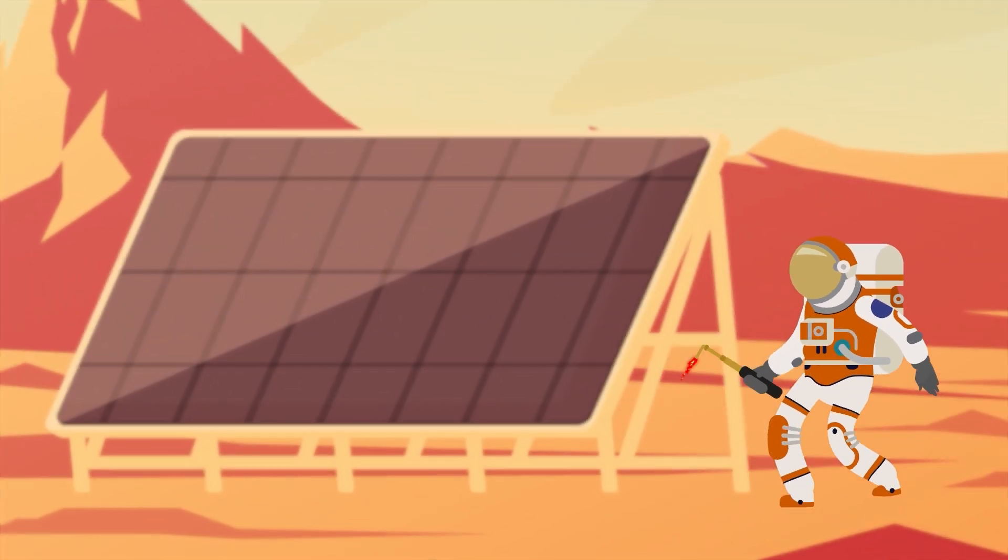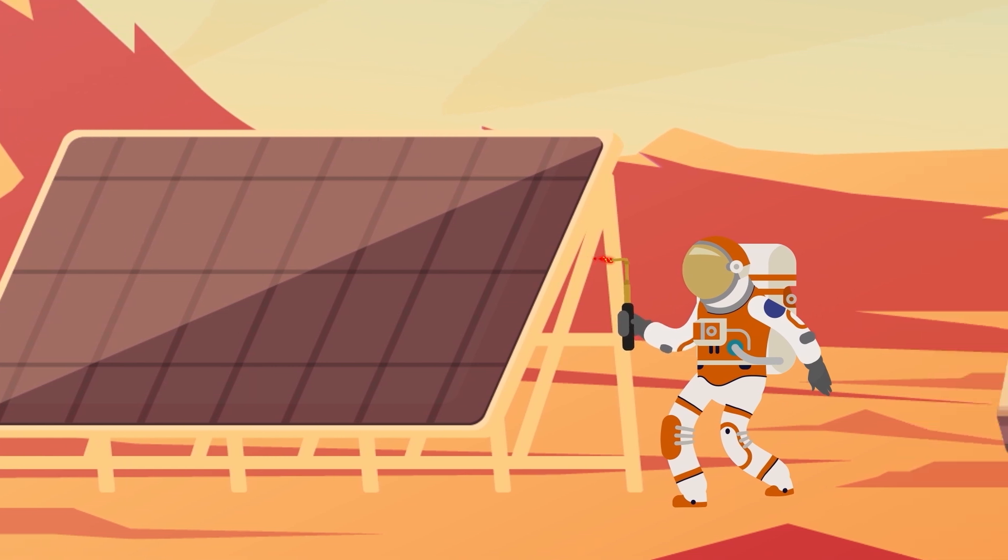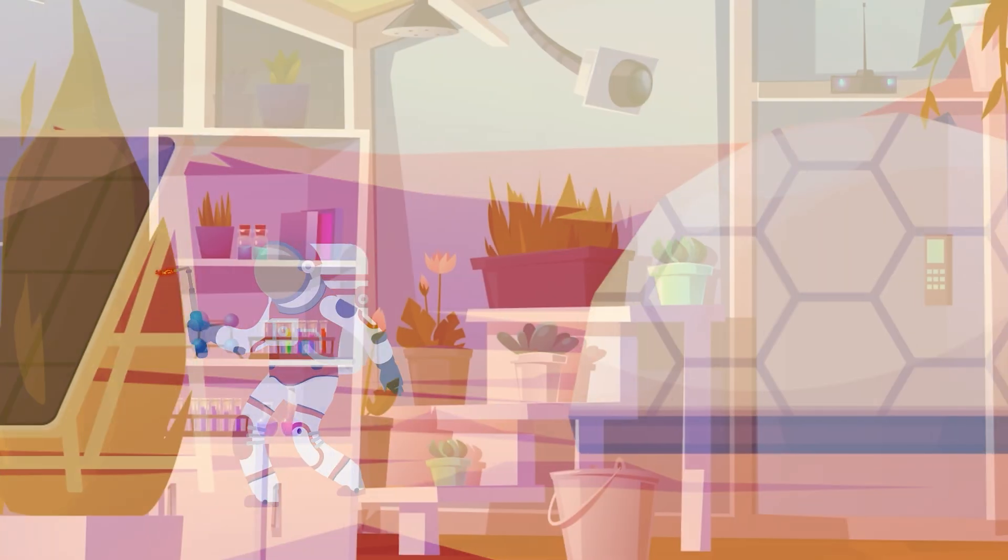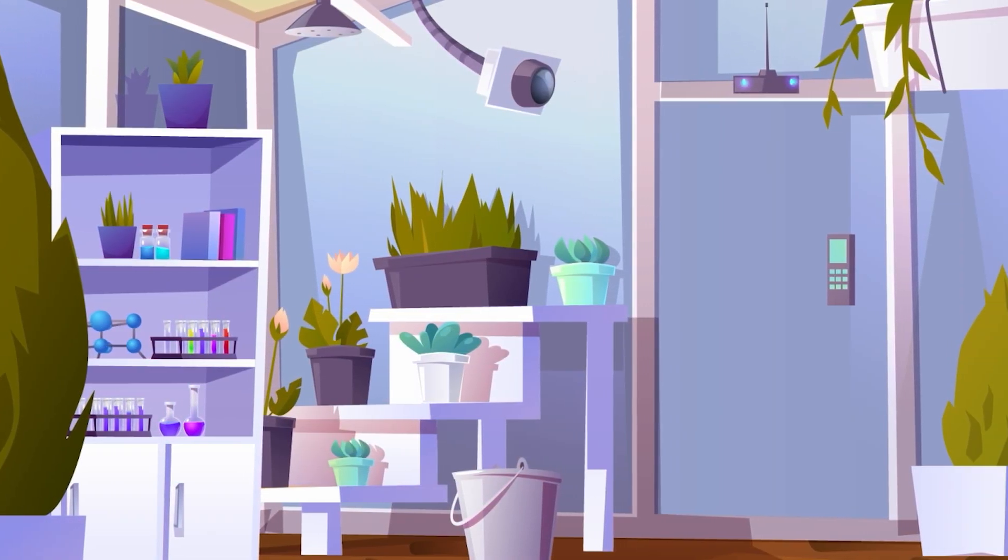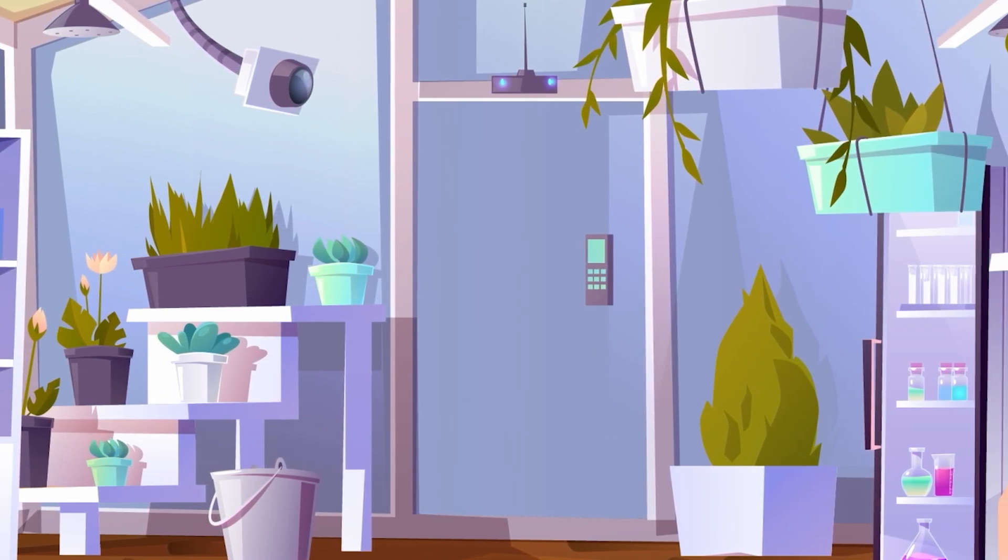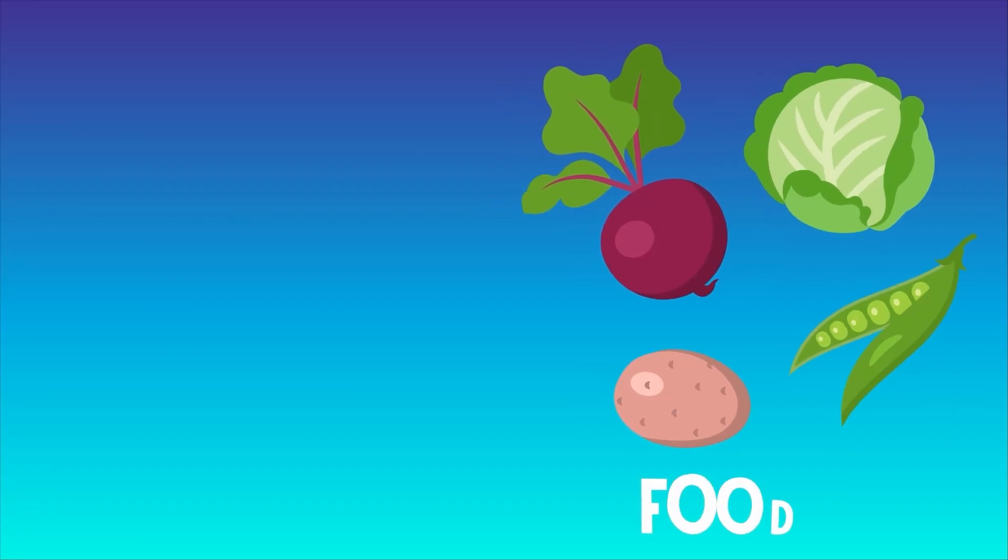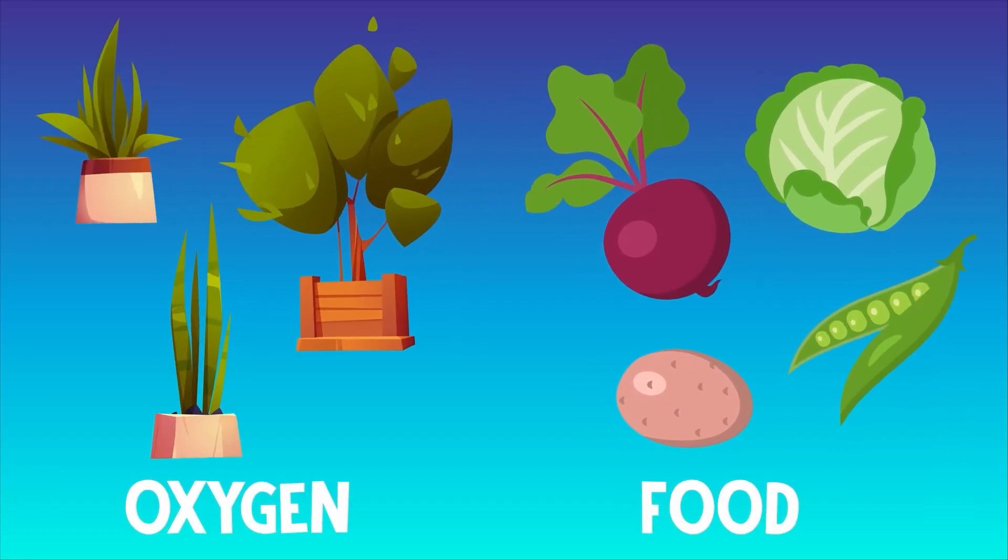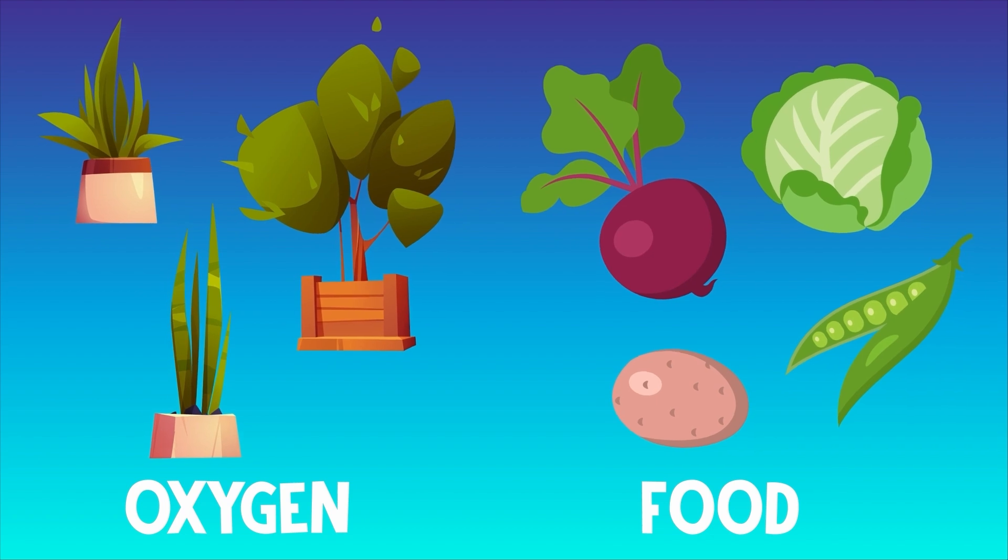Humans would need to put together solar panels, harvest water from deep underground, and build big greenhouses full of plants that can survive all the harsh planetary conditions. Some plants would be grown for food, and others would be grown to make oxygen for the astronauts to breathe.